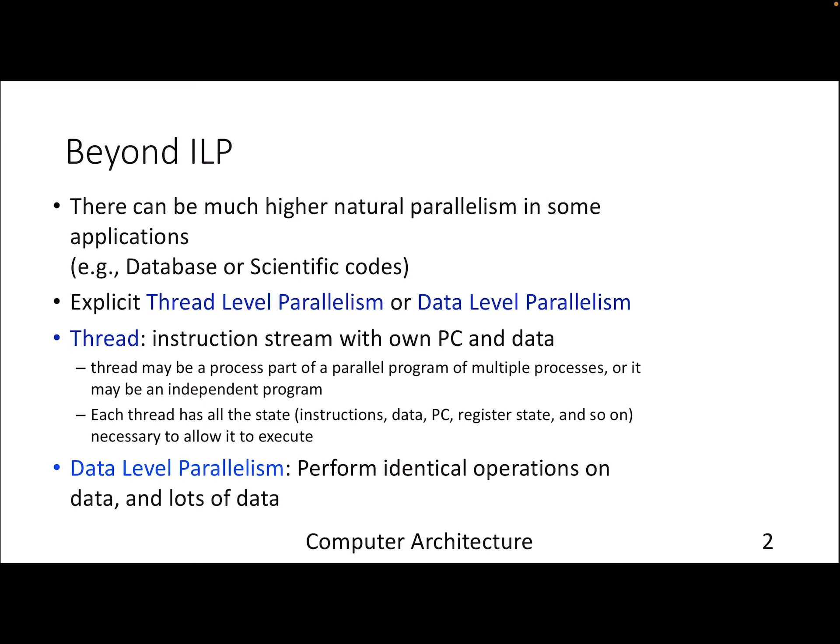In these cases, although ILP will be able to improve by scheduling the instructions properly, it would be better if we can exploit data level parallelism. To exploit data level parallelism, the concept we will look into in today's lecture is the notion of a thread — and when I say thread, it's actually a hardware thread, not a software thread. The hardware thread can be assumed as a program counter, register state, and everything needed for a particular program execution.